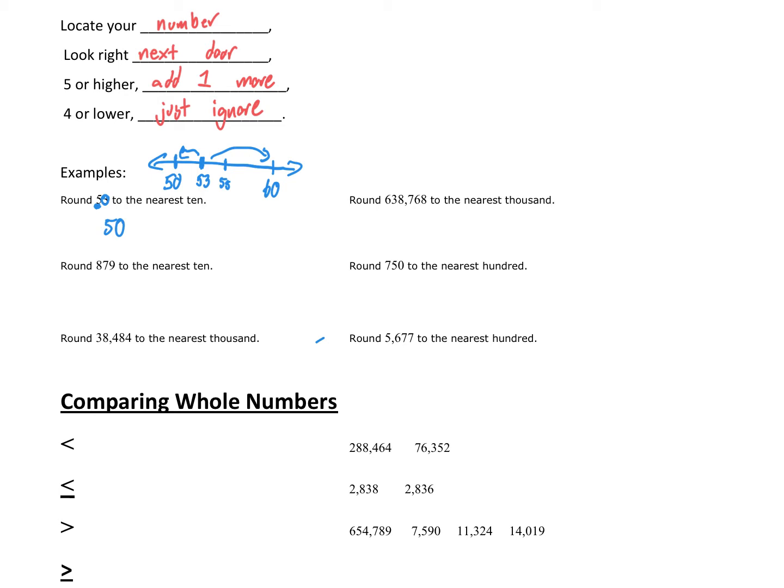Look at this next example. Round 638,768 to the nearest thousand. So I'm going to locate my number in the thousands. It's an eight. Look right next door. I'm looking at the seven. So we're going to have to decide is 638,768 closer to 638,000 or 639,000? This seven tells us it's five or higher, so we're going to add one more. It is closer to 639,000.